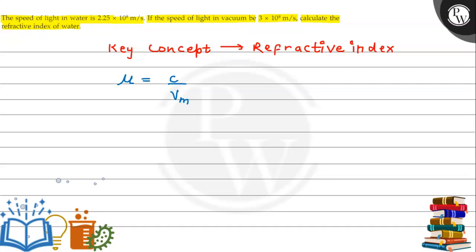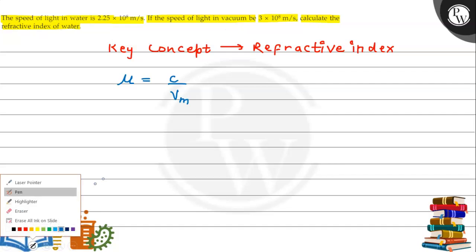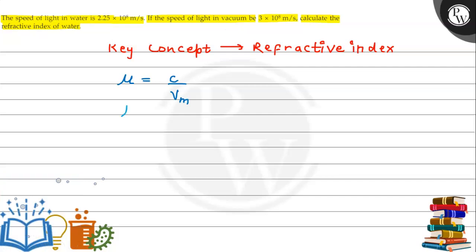Using this formula, we will put in the values. Refractive index is equal to c divided by v_m, which is 3 into 10 to the power 8 meter per second divided by 2.25 into 10 to the power 8 meter per second. Solving this, the refractive index of water comes out to be 1.33.